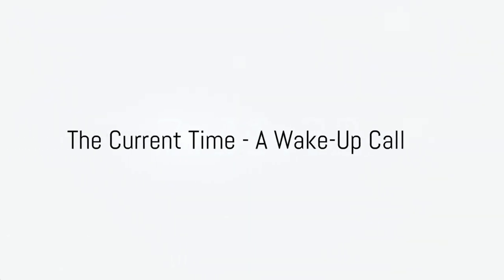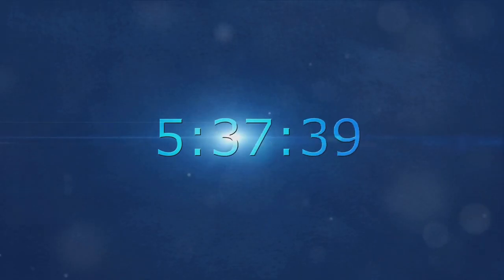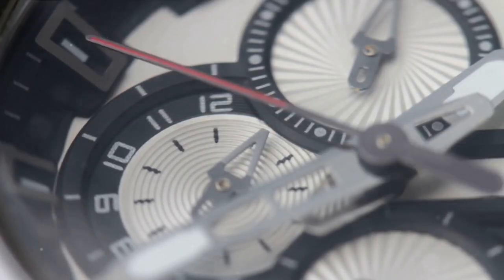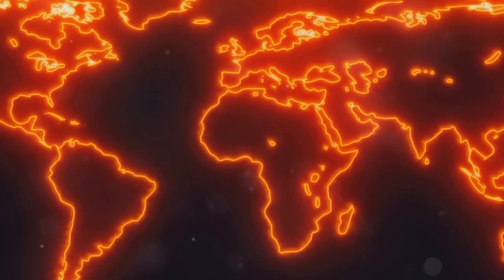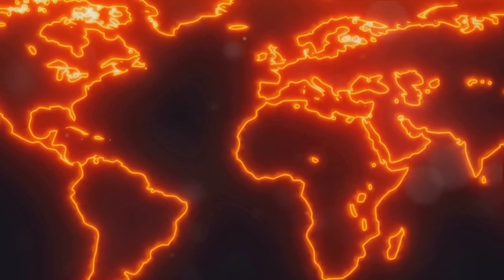You might be wondering, what's the current time on the Doomsday Clock? The answer is a chilling one. We currently stand at a daunting 100 seconds to midnight. This is not just a number, it's a stark warning. It's the closest we've ever been to global catastrophe since the clock's inception back in 1947.